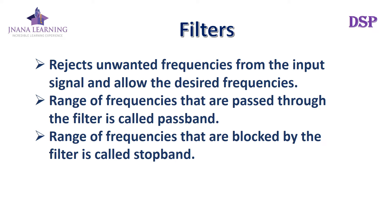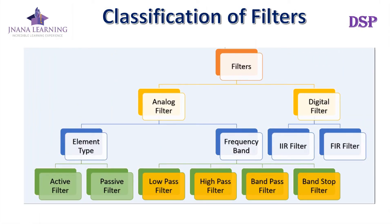Next, we look at the classification of filters. Here is a diagram showing the various types of filters. Basically, we can classify filters into two types: analog filters and digital filters. Under analog filters, we can further classify based on element type used — active filters and passive filters — and based on frequency band: low pass, high pass, band pass, and band stop filters. Under digital filters, we have IIR filters and FIR filters.